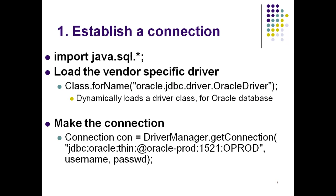The second step is making the connection. Using the Connection class, we write: Connection c1 = DriverManager.getConnection(...). Since we are connecting with Oracle, we specify Oracle in the connection string, along with the port, DSN name, username, and password. In the case of MS Access where there is no username or password, we keep those fields blank.